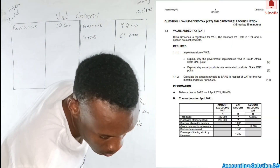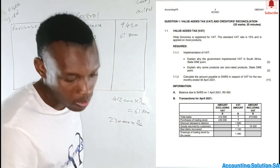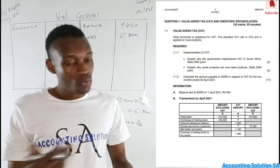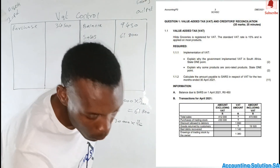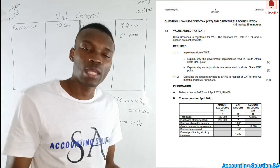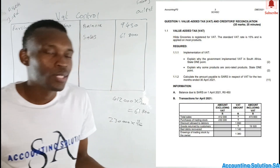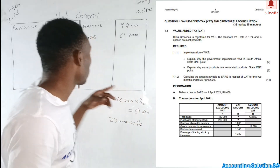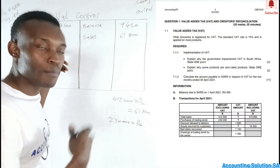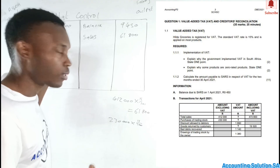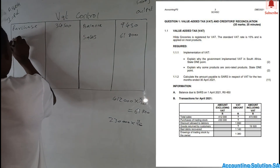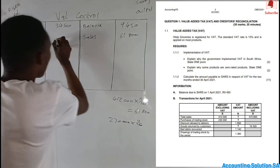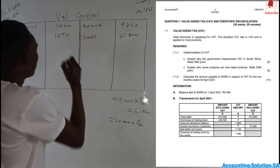Transaction 3: Discount allowed to debtors. They already give us the VAT amount of R1,890. The question is: which side do we record this? We give a discount to a debtor, which means we did not receive the full benefit — we cannot pay SARS for something we didn't receive. Therefore, the discount or allowance amount of R1,890 must come to VAT input (debit side).